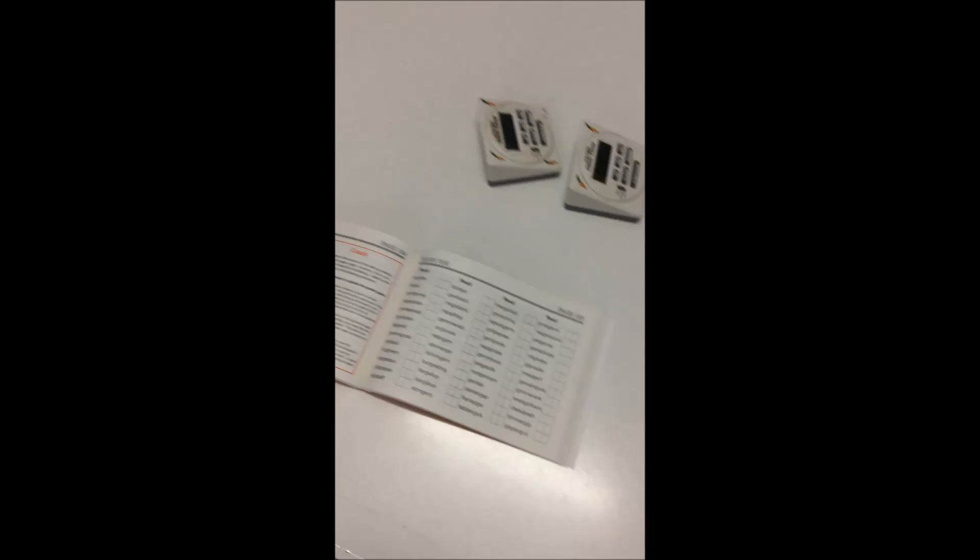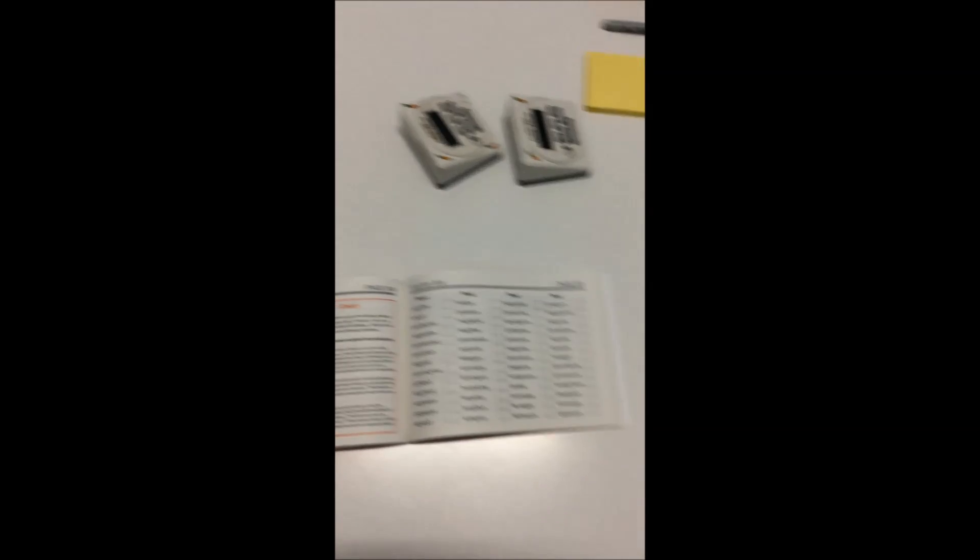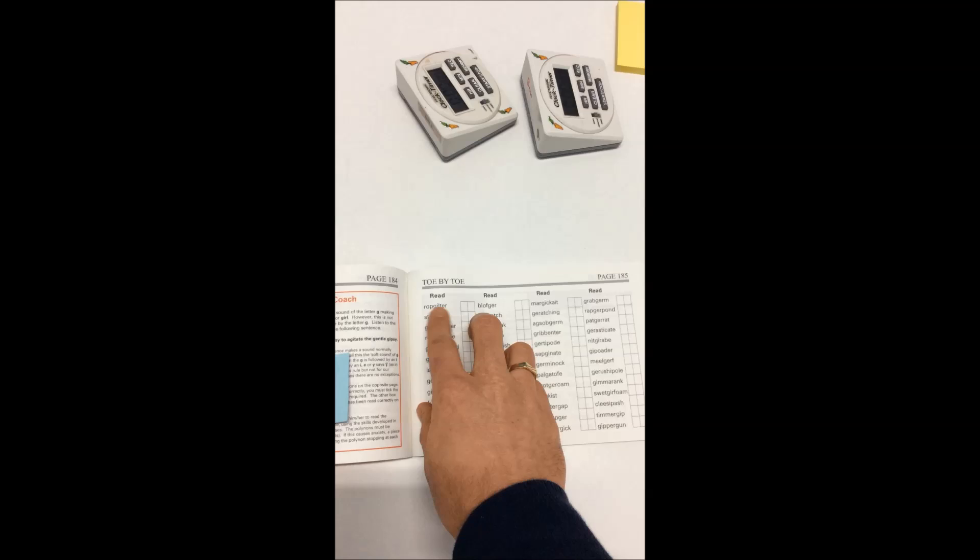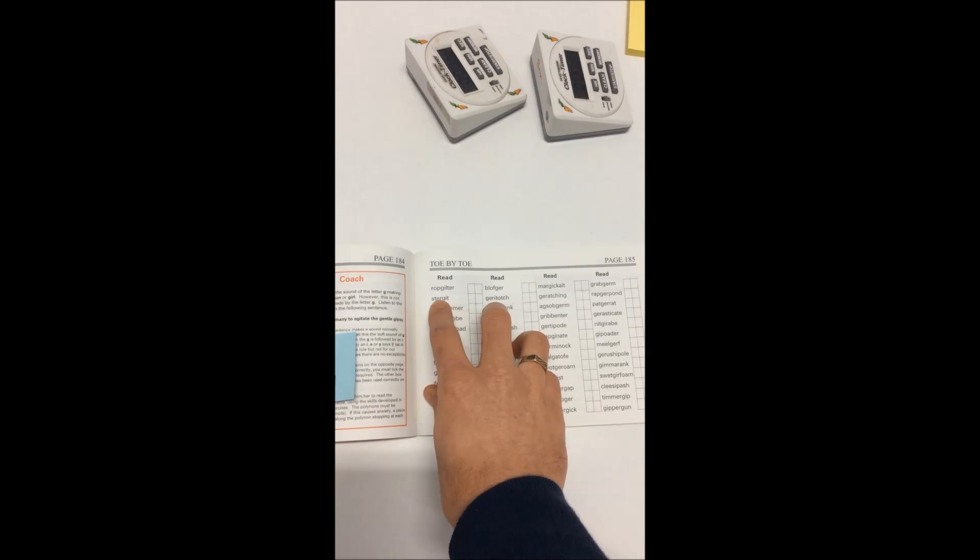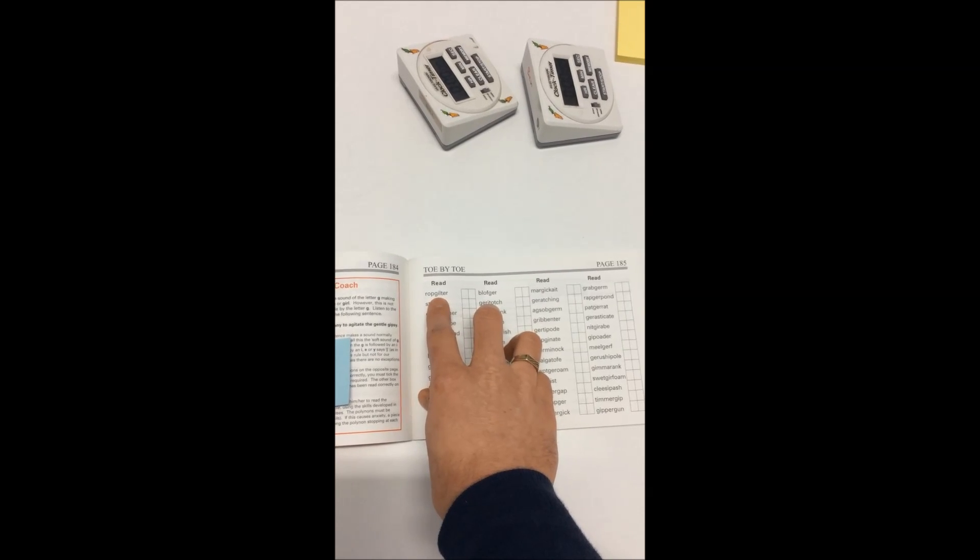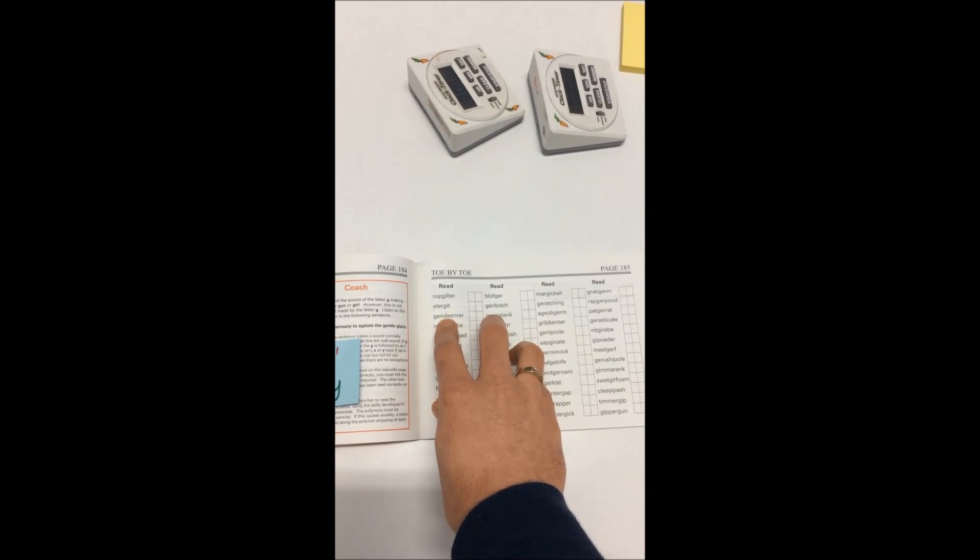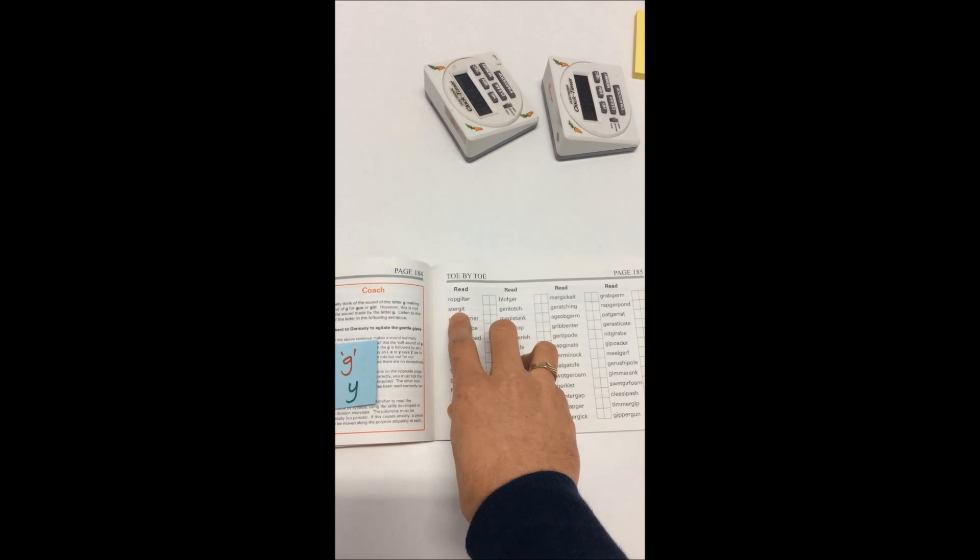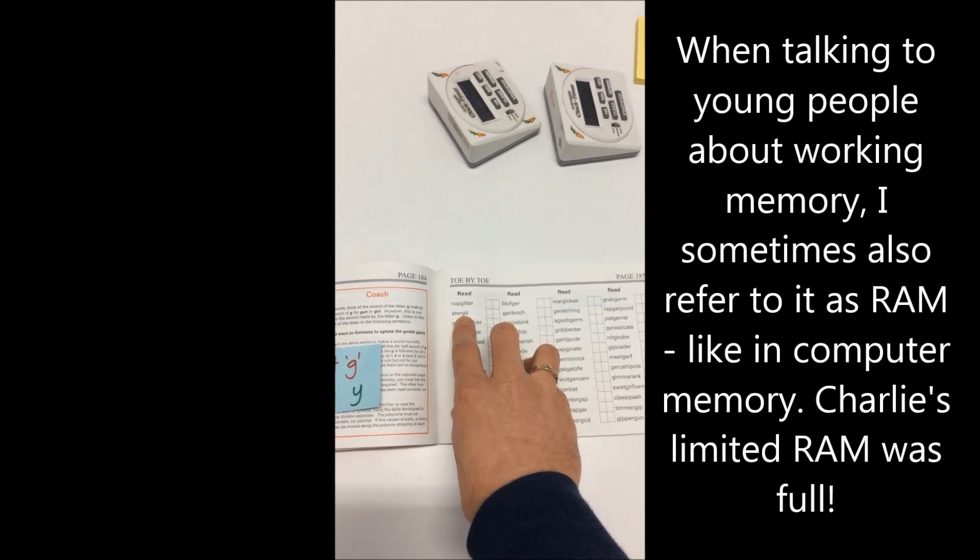Charlie had been going quite nicely on the previous pages working with these graphemes fairly nicely, and then along comes the idea of soft G. And almost straight away, Charlie was struggling to decode. His brain was working so hard on looking at the G and the letter after it, and we were using highlighters and all sorts of things to point his attention to what he needed to look at.